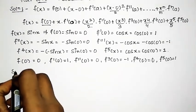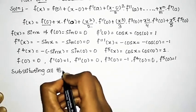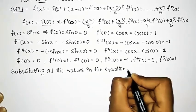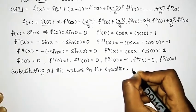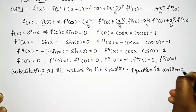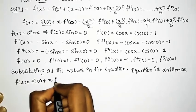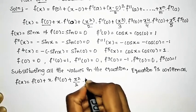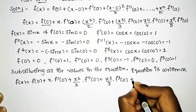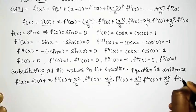Now we substitute all the values in the equation. The equation is: f(x) = f(0) + x · f'(0) + x² / 2 · f''(0) + x³ / 3 · f'''(0) + x⁴ / 4 · f''''(0) + x⁵ / 5 · f'''''(0).